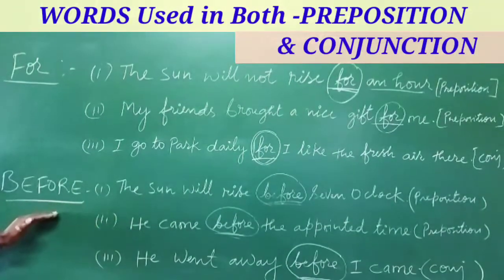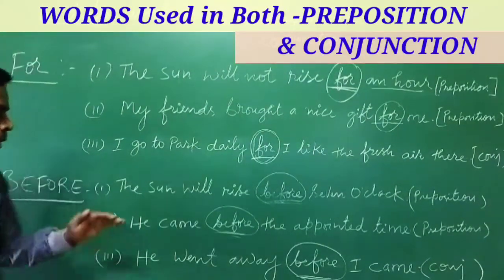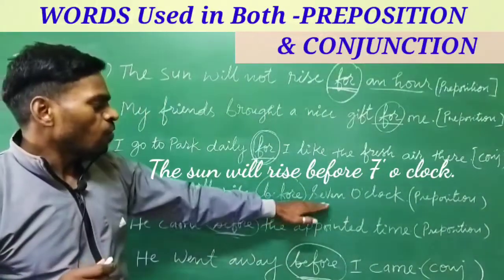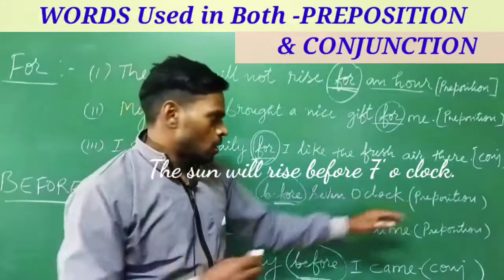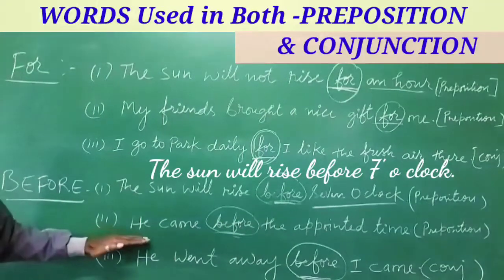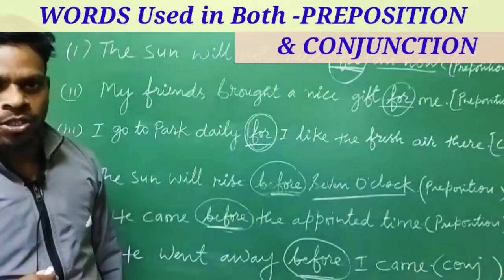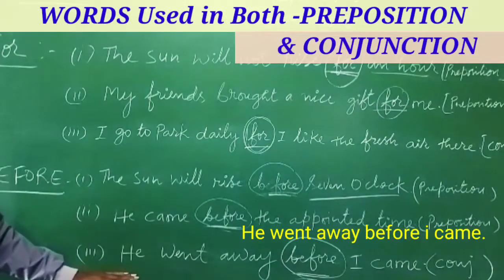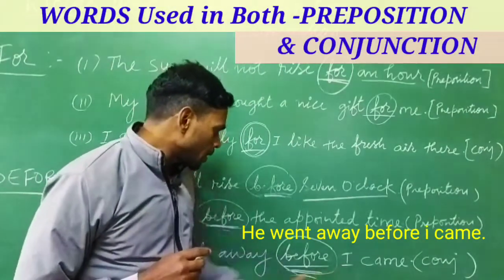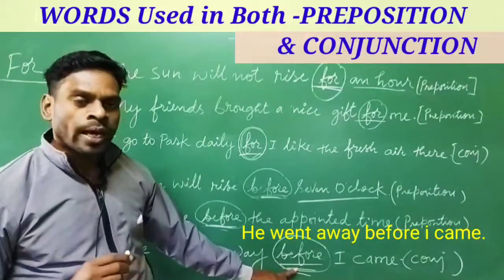'Before' is also a word used for both prepositions and conjunctions. First sentence: 'The sun will rise before seven o'clock.' Here 'before' is used as a preposition, since 'seven o'clock' is a noun. Second sentence: 'He came before the appointed time.' Again, 'before' is a preposition. Third sentence: 'He went away before I came.' Here 'before' is used as a conjunction because it is connecting two sentences.